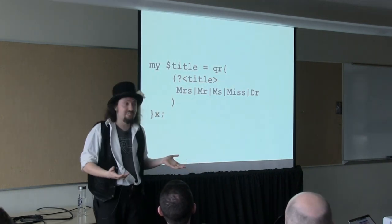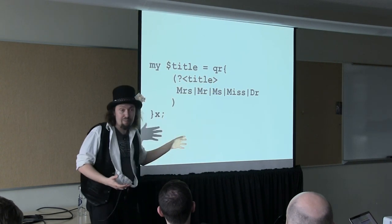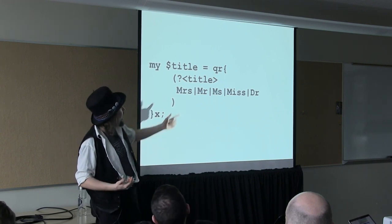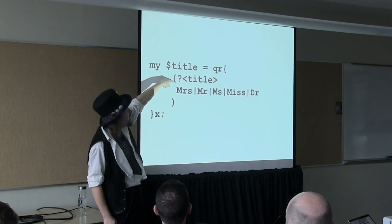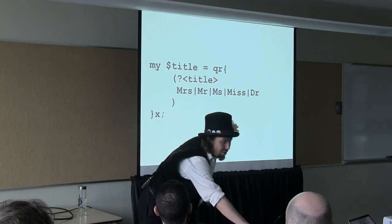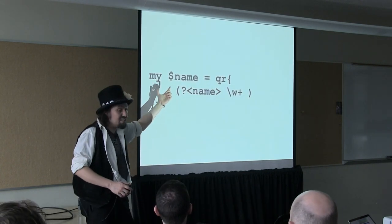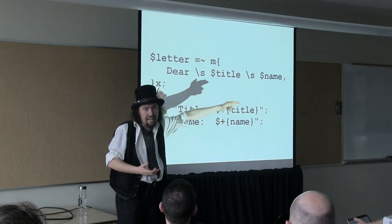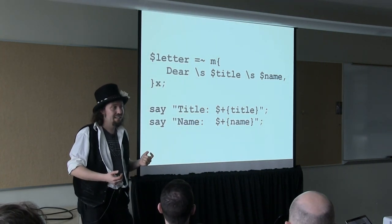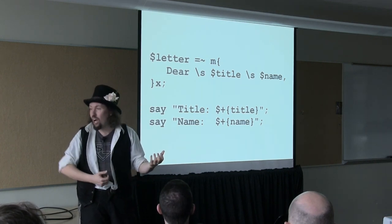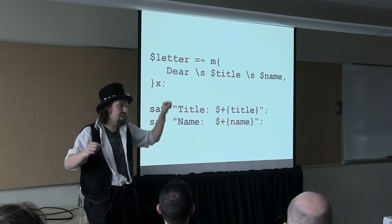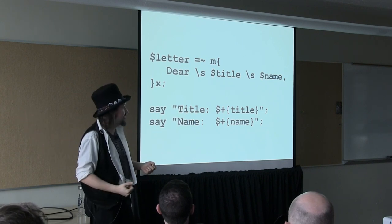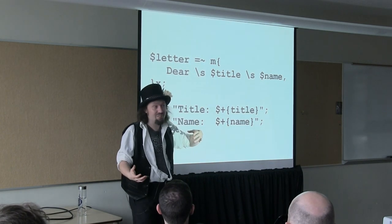Perl 5.10 has named captures — named parentheses. I use question-mark angle-brackets to give them a label. Notice I don't need comments anymore because it's self-commenting code. These are my permissions, these are my links, this is my user, and so on. Now I don't have to refer to things by $1, $2, $3 — instead I can say $+{filename} or $+{size}. This gives you a much easier and more resilient way of extracting information from regular expressions. You can also use QR — which gives you a regular expression fragment that you compile but don't execute immediately — to build composable named regex pieces. So you might have a 'title' fragment and a 'name' fragment, and compose them: 'Dear title name'. You can extract title and name using the named captures. These are much easier to test because you can put them in their own library.